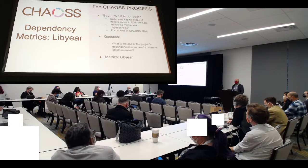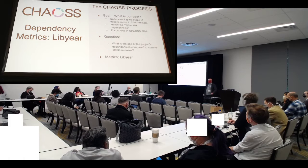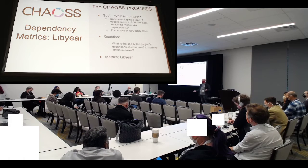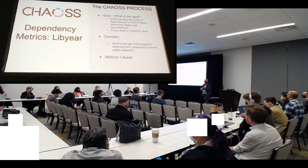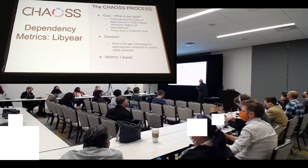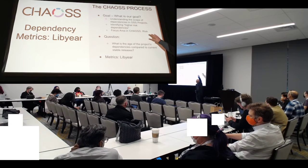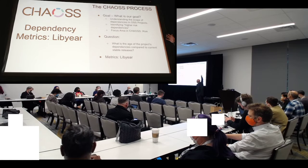We used the goal-question-metric process that has been essential in the CHAOSS project to define two metrics so far. One is upstream dependencies for my software, and the other is Libyear. In the case of Libyear, I'll just use this brief example. Our goal is understanding the scope of dependencies in a project and identifying the higher-level dependencies.